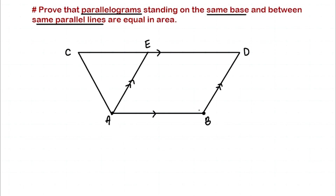Now we are going to make another parallelogram in this direction. This is our second parallelogram — let's name this point F. So we have parallelogram ABFC, which is pointing towards the left side. This parallelogram is also standing on the base AB and it is also between the same parallel lines CD and AB. The theorem tells us that parallelogram ABDE and parallelogram ABFC have equal area, and that's what we are going to prove mathematically.